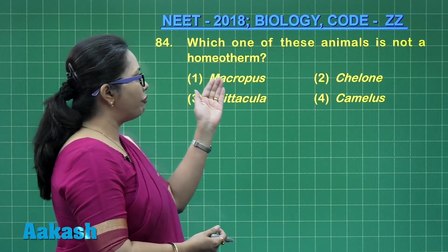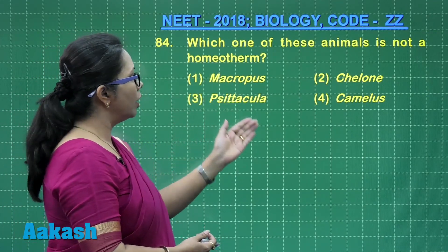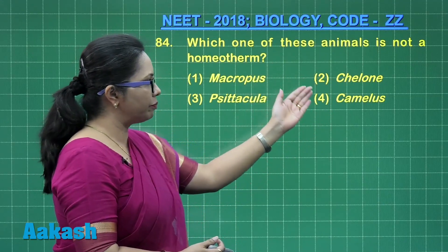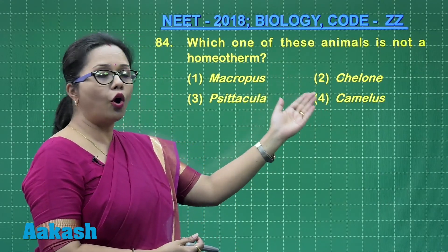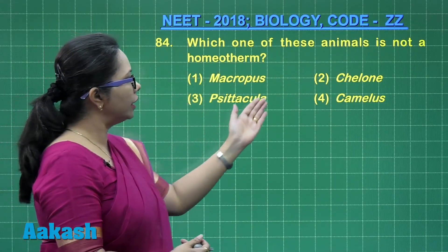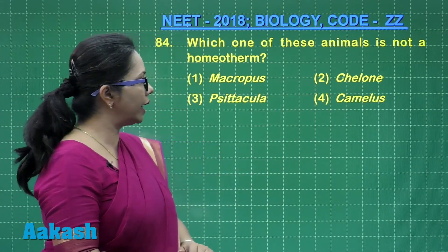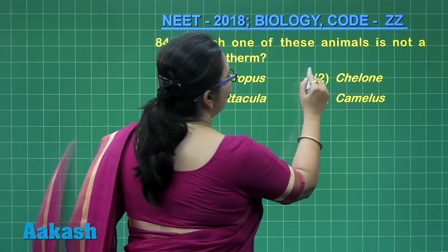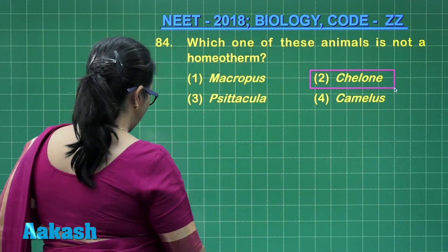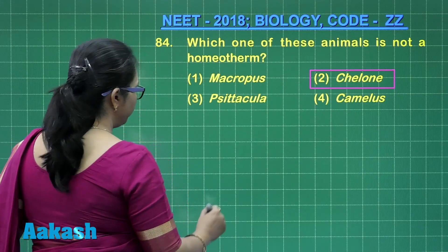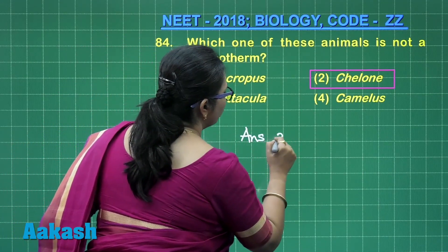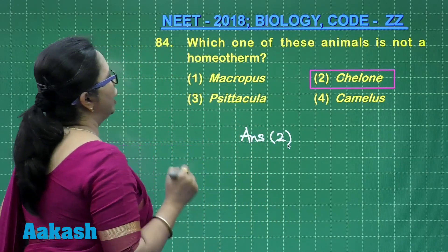Homeothermy is a characteristic of mammals and birds. Here we have Macropus (kangaroo), and Chelone, which is a turtle — that is a reptile and is cold-blooded.